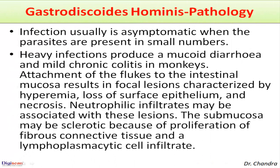Regarding the pathology of Gastrodiscoides hominis: infection is usually asymptomatic when parasites are present in small numbers. Heavy infections produce mucoid diarrhea and mild chronic colitis in monkeys. Attachment of the fluke to the intestinal mucosa results in focal lesions characterized by hyperemia.